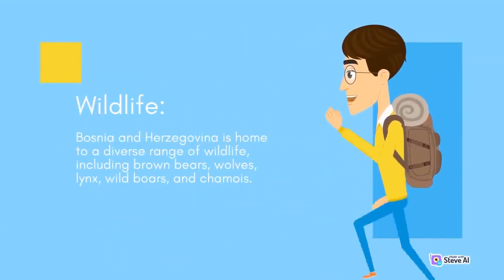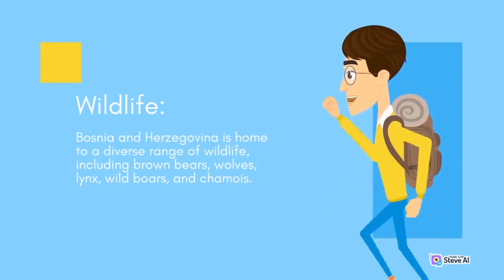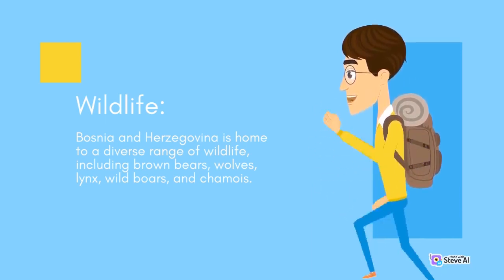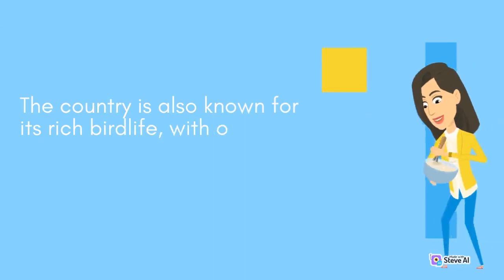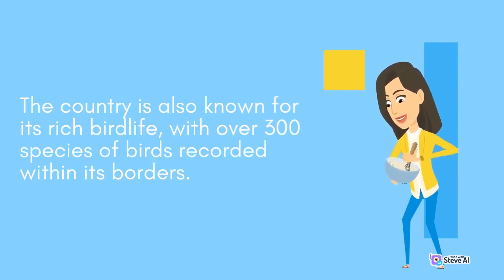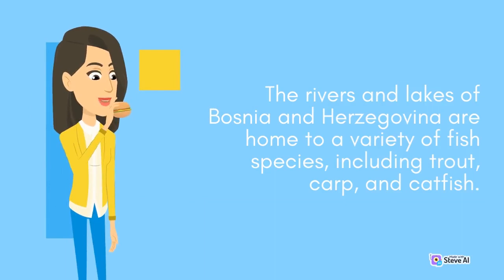Bosnia and Herzegovina is home to a diverse range of wildlife, including brown bears, wolves, lynx, wild boars, and chamois. The country is also known for its rich bird life, with over 300 species of birds recorded within its borders. The rivers and lakes are home to a variety of fish species, including trout, carp, and catfish.